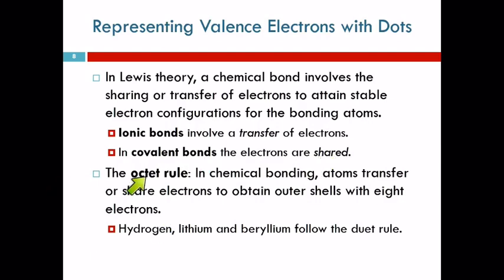We have something called the octet rule for the Lewis theory. In chemical bonding, atoms transfer or share electrons to obtain outer shells with eight electrons. And these little guys—hydrogen, lithium, and beryllium—follow the duet rule. They didn't even put helium in there because helium doesn't make any compounds. It doesn't make compounds with anything, so we're never going to draw a Lewis structure for helium except as an atom.